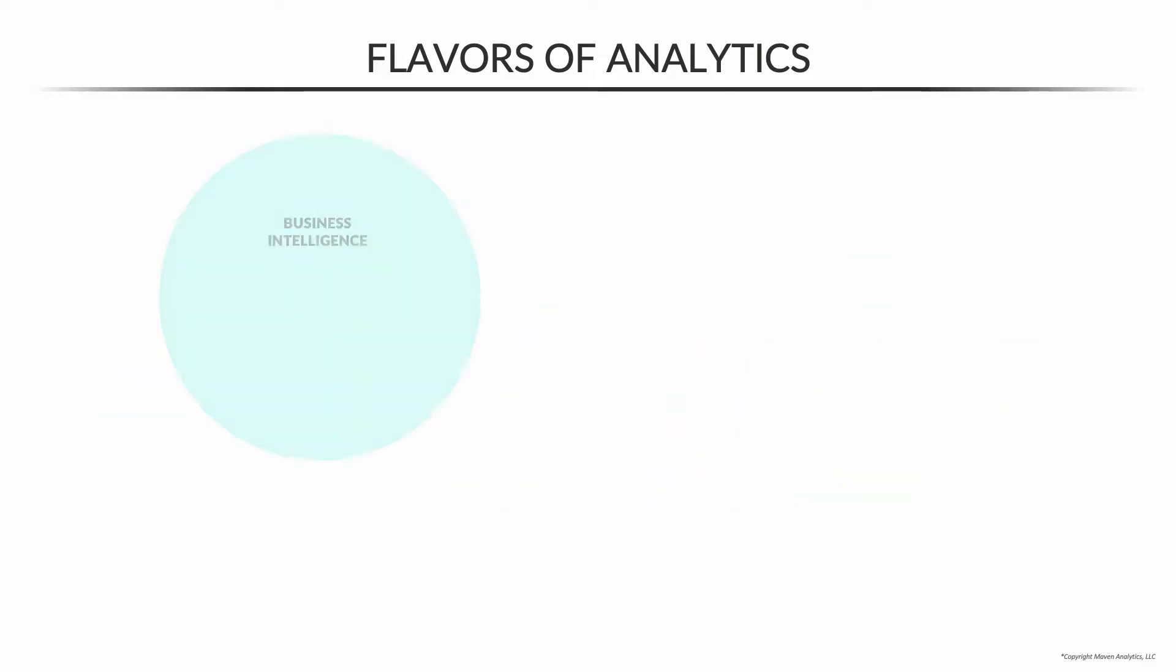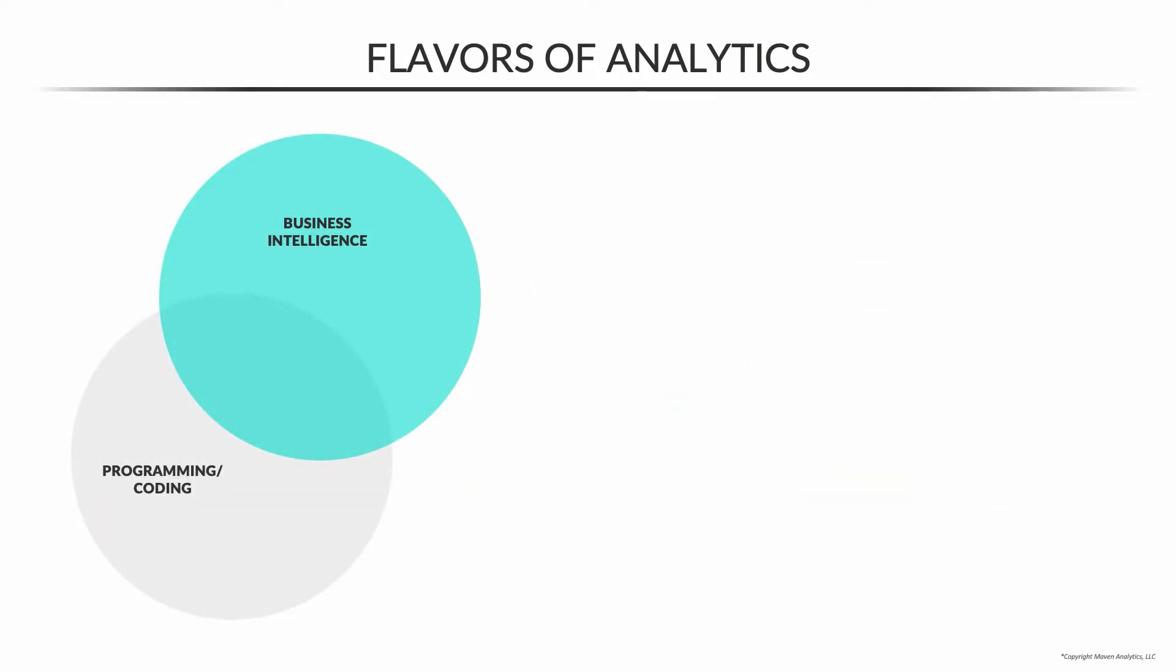You may have seen Venn diagrams out there that look something like this. This version is adapted from Learn.co. You've got business intelligence skills in the blue bubble, programming and coding skills in gray, and math and stats skills in yellow.